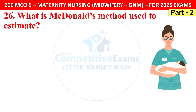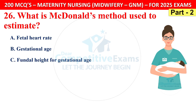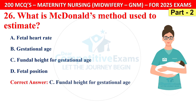Question 26: What is McDonald's method used to estimate? Options are fetal heart rate, gestational age, fundal height for gestational age, or fetal position. The correct answer is C — fundal height for gestational age.